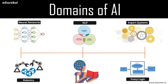Robotics is a branch of AI composed of different branches and applications of robots. AI robots are artificial agents acting in a real-world environment. Artificial intelligence robotics is aimed at manipulating objects by perceiving, picking, moving, and destroying them.